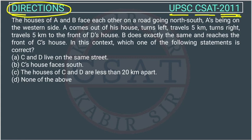The house of A and B faces each other on a road going north-south. Whenever we see a direction question, we draw the compass: this is north, this is south, this is east, this is west. So A and B's houses are on the north-south road, facing each other.